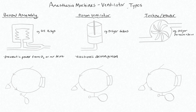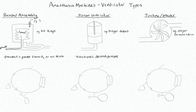So we'll start with the bellow assembly. This is your bellow and it will compress to force gas out to the patient. Machines with this bellow assembly — you'll see them on the side — have this collapsible bellow. It collapses because there is a supply of highly pressurized oxygen that enters into this rigid chamber to squeeze down on it.